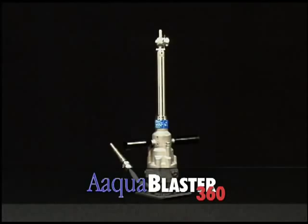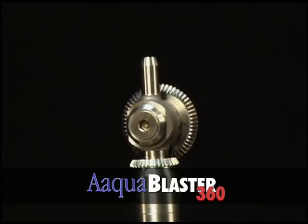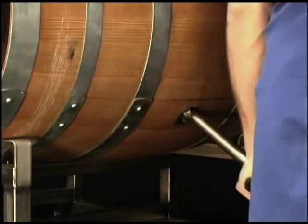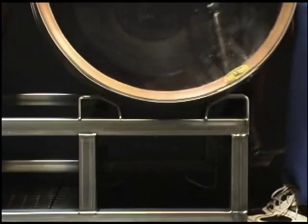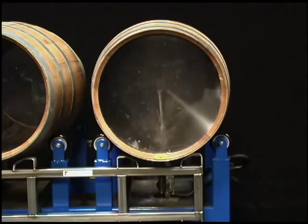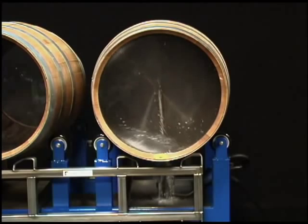The Aquablaster 360 is built for small openings like 55 gallon drums or wine barrels. Insertion is easy and can be done from any direction. Once inside, a 360 degree spray pattern ensures a thorough and complete cleaning.